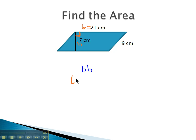So we'll replace b, the base, with 21 centimeters. Replace h, the height, with 7 centimeters. And we're simply multiplying 21 times 7, which is 147 centimeters times centimeters, is centimeters squared. And we have our solution for the area, 147 square centimeters.